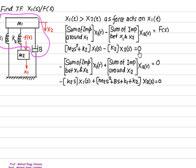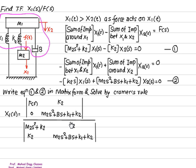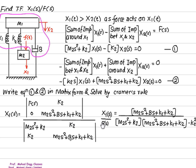There is a correction here: when writing the sum of impedances around x2, x2 is connected to m1, so we select all elements around m1 — k1, k2, b, and m1. The correct expression is m1·s² + b·s + k1 + k2, multiplied by x2(s). Applying Cramer's rule and solving for x1(s), we get x1(s)/F(s) equal to (m1·s² + b·s + k1 + k2) over the determinant of the matrix, with k2 in the numerator coupling term.